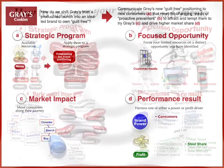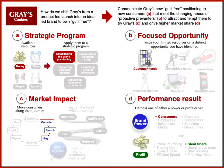Coming back to the strategy, this kind of thinking helps me structure my overall strategic statement. I'm going to invest money in establishing the brand positioning — that's my A: communicate Graze's new guilt-free positioning. What I'm going to take advantage of is changing consumer needs in the marketplace, as we see consumers shifting to more healthy options. For the C — the market impact — I want to move consumers along their journey, focusing on consideration and trial to get them to try it. And then at the bottom, I want to build a tighter bond with these consumers, gain power in that relationship, and use that to help steal market share.